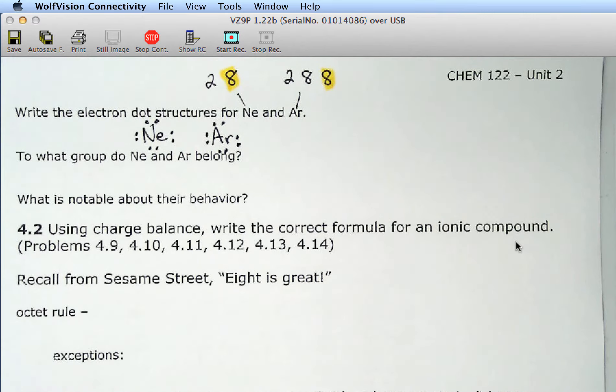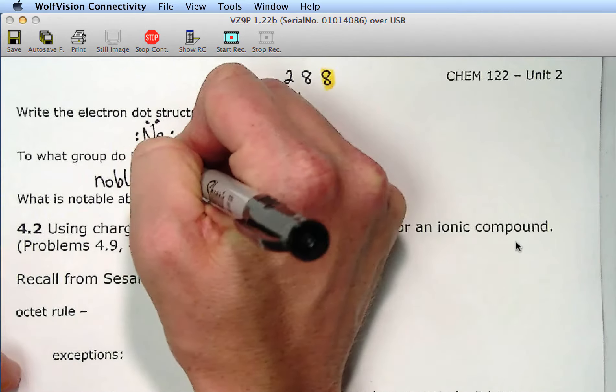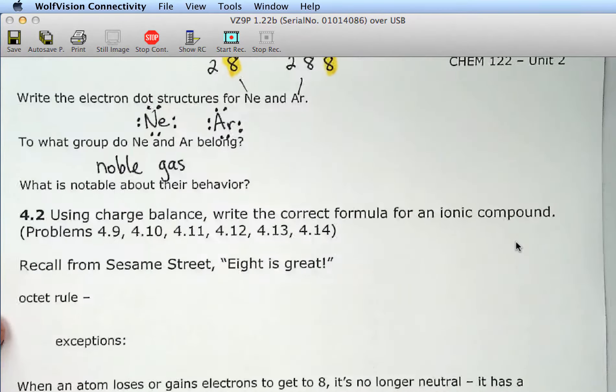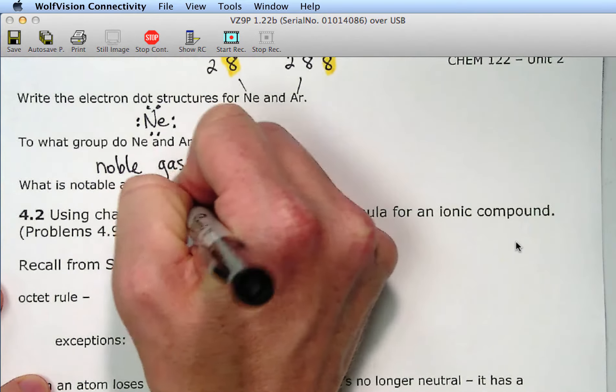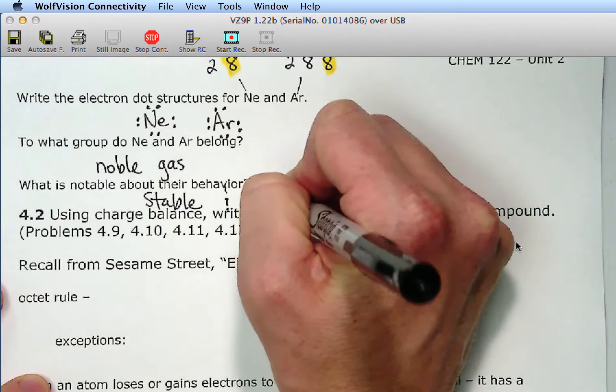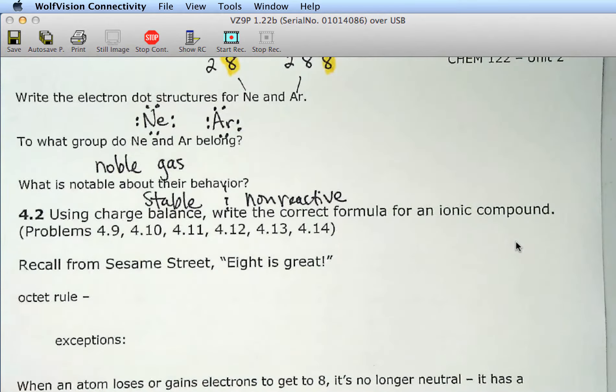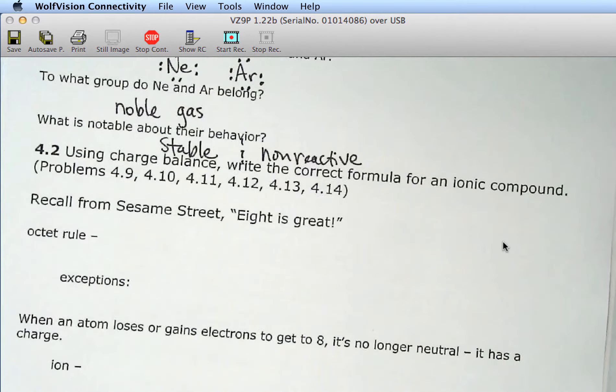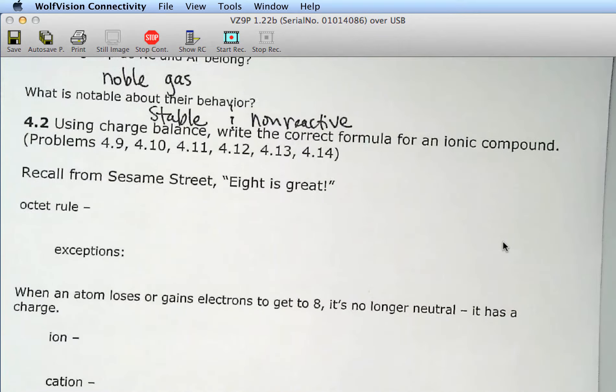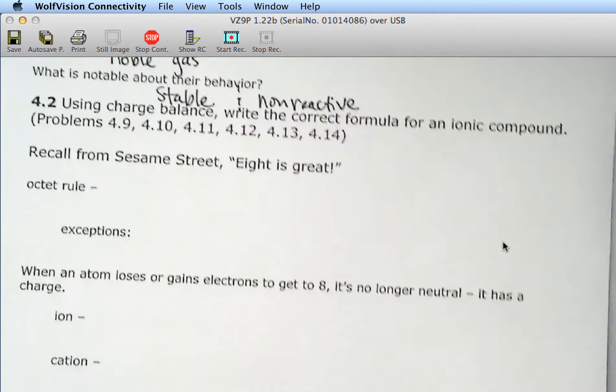So, what group do neon and argon belong in? Noble gases. Good. What is notable about noble gas behavior? Yes, they're stable and non-reactive. They are very content. They have eight electrons.